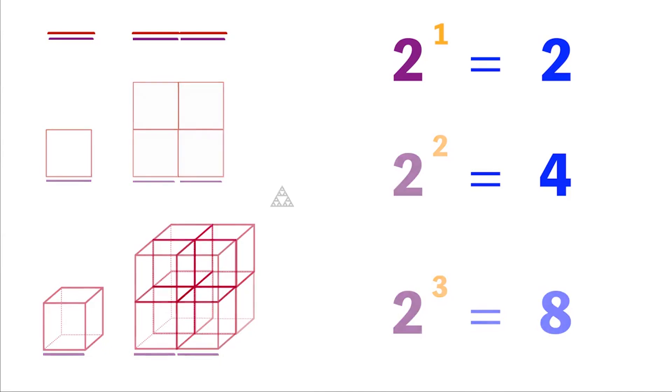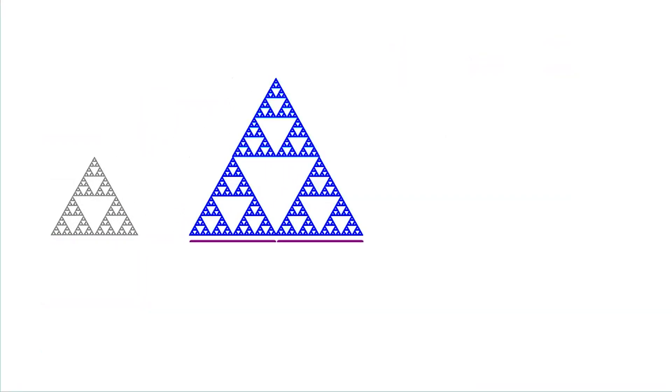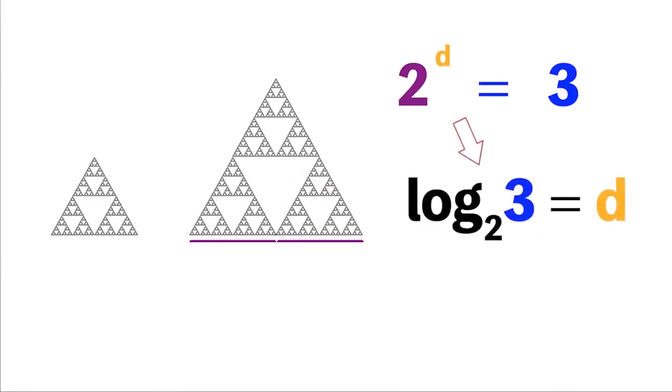Let's take the Sierpinski triangle. If we scale that by a factor of two, there's now three triangles. So to get its dimension, solve for two to dimension equals three, and we get 1.585.